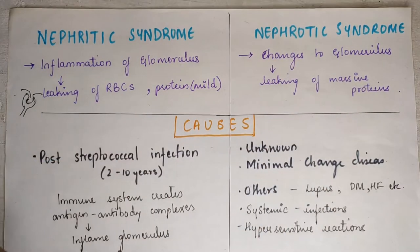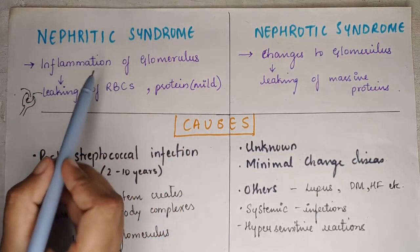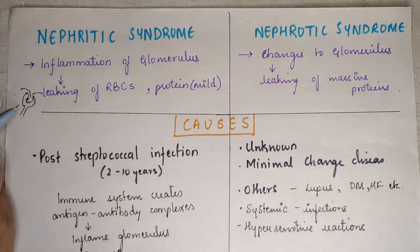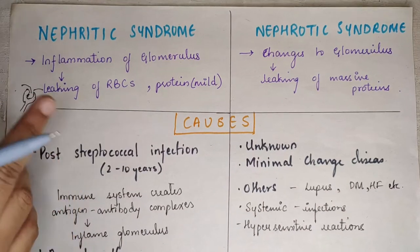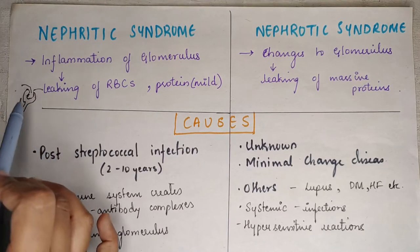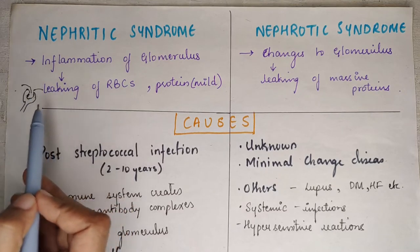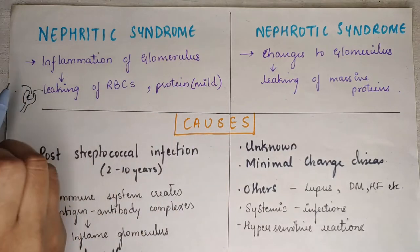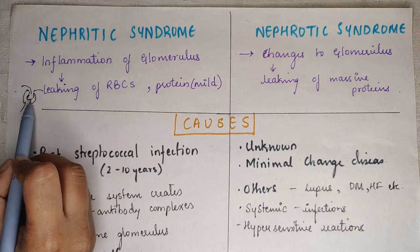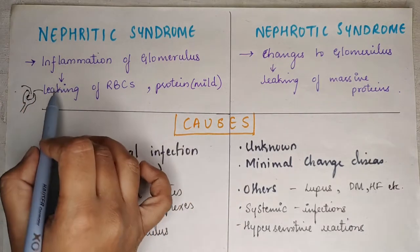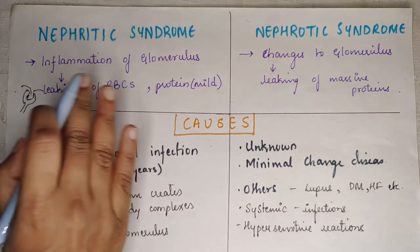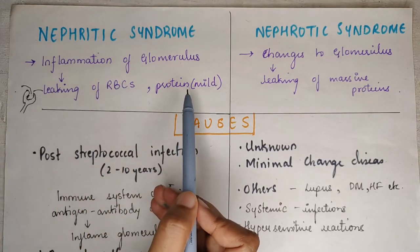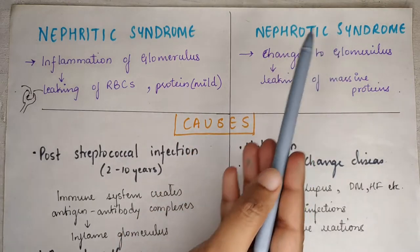Nephritic syndrome is seen whenever there is inflammation of the glomerulus. When there is inflammation, the basement membrane becomes permeable, which leads to leaking of RBCs. In normal physiology this doesn't happen, but due to excessive permeability that will lead to leaking of RBCs and some amount of protein as well.